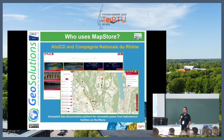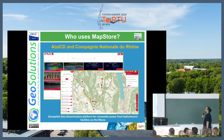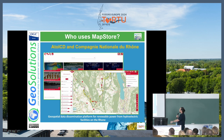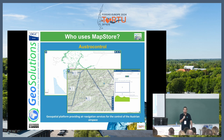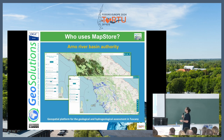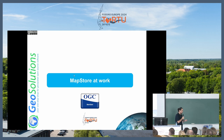MapStore can also be used as a product itself — you can download, install, and make it work. This is the case for Etol CD, which uses MapStore with a few customizations and tools they developed on their own. AustroControl, an air navigation services company, uses MapStore as a product and developed custom plugins installed in their version. Other examples include the Arno River Basin Authority and the City of Genoa, which contributed significantly to MapStore's development.